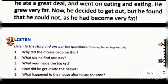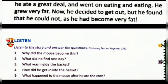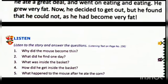Now we are asked a few questions. Question 1: Why did the mouse become thin? The mouse became thin because he could find no food. Question 2: What did he find one day? He found a basket full of corn. Question 3: What was inside the basket? There was a small hole in the basket. Question 4: How did he get inside the basket? He got inside through a small hole. Question 5: What happened to the mouse after he ate the corn? The mouse became very fat. Today we are keeping till here. Thank you.